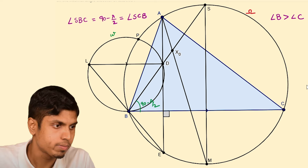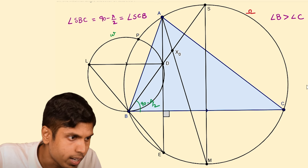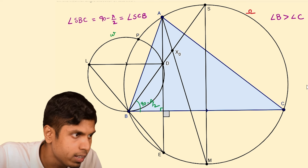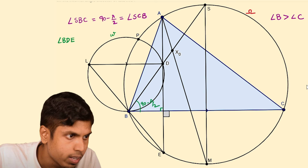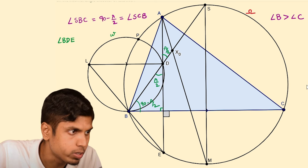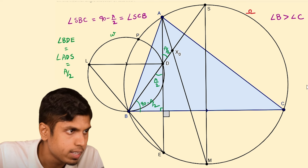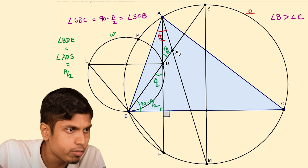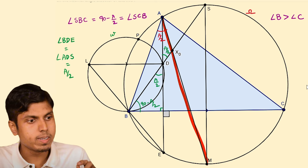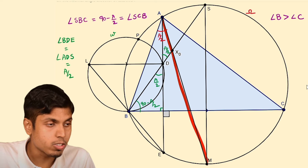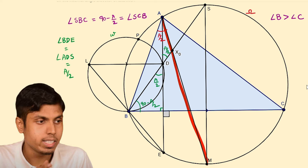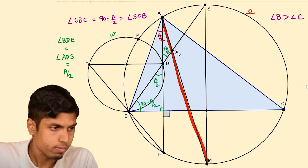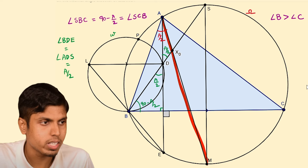We will use those results later. Since angle SBC is 90 minus A/2 and angle ADB is 90, we get angle BDE equals A/2. In other words, angle ADS equals A/2 by vertically opposite angles. Now, angle BAM is also A/2 because AM is the angle bisector. Notice that the angle bisector passes through the midpoint of the opposite arc BC — the arc not containing A — and M is the midpoint of it. This is because both arcs subtend A/2, so BM equals CM.